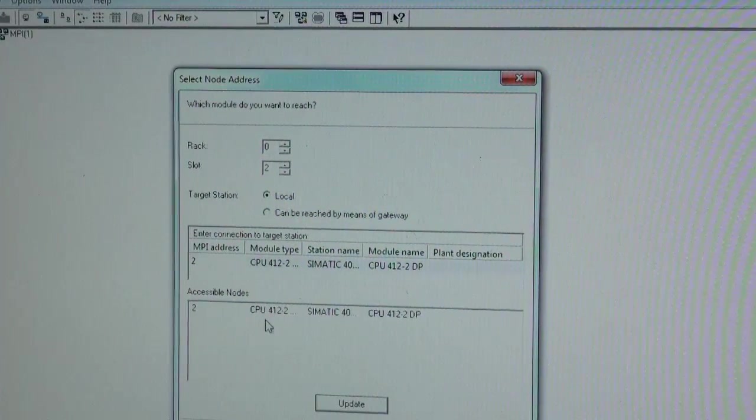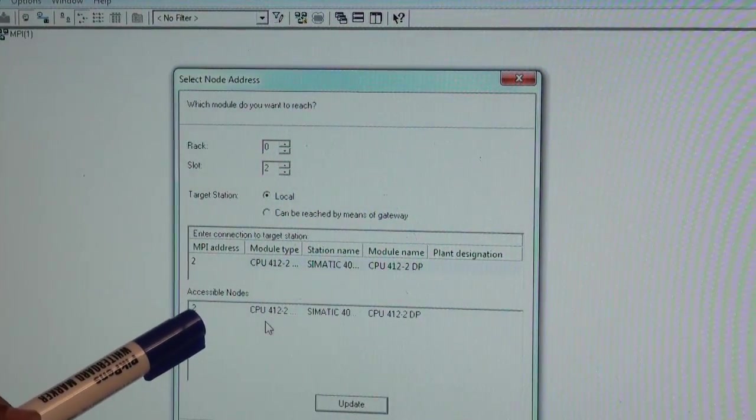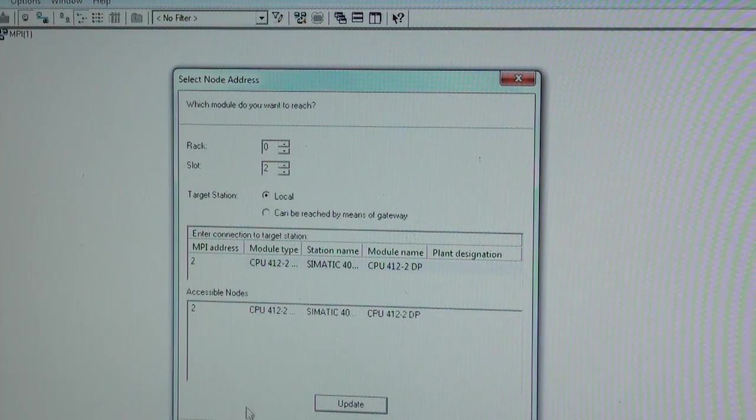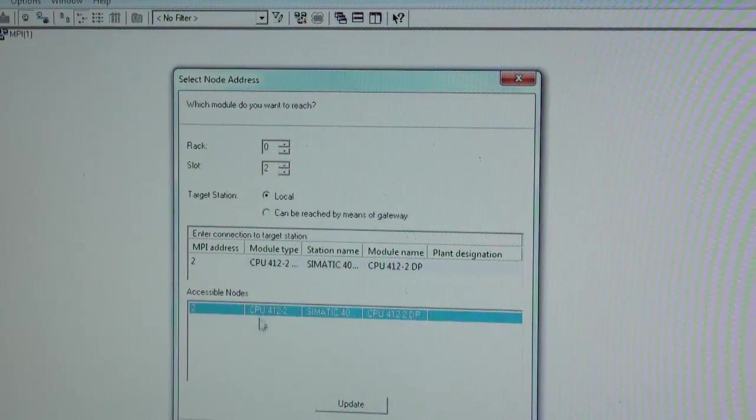Now the system is showing that to node number 2, CPU 412-2DP is connected. We need to select it and say OK.